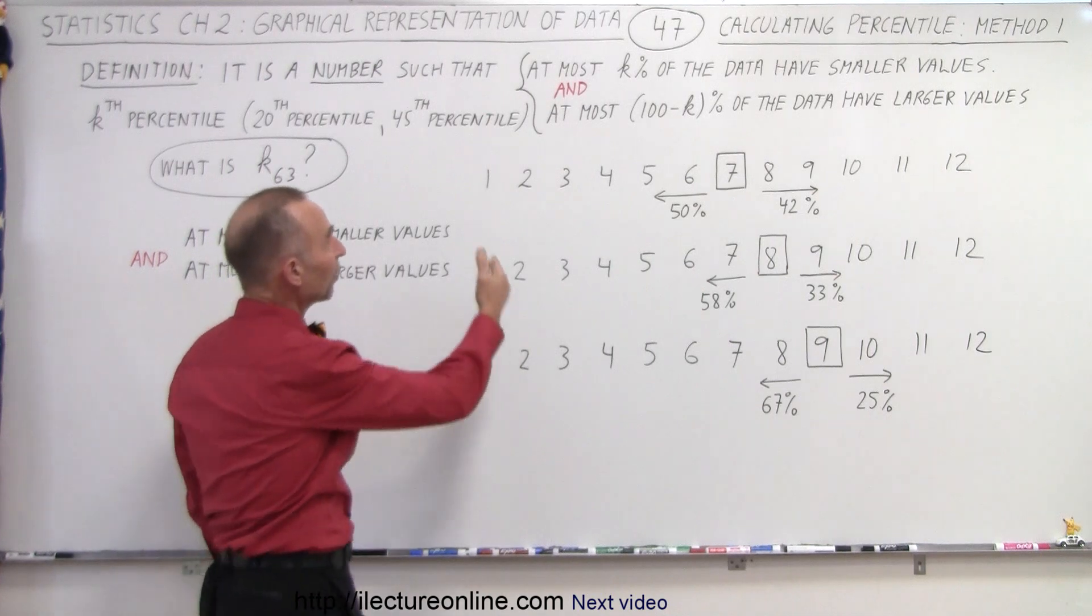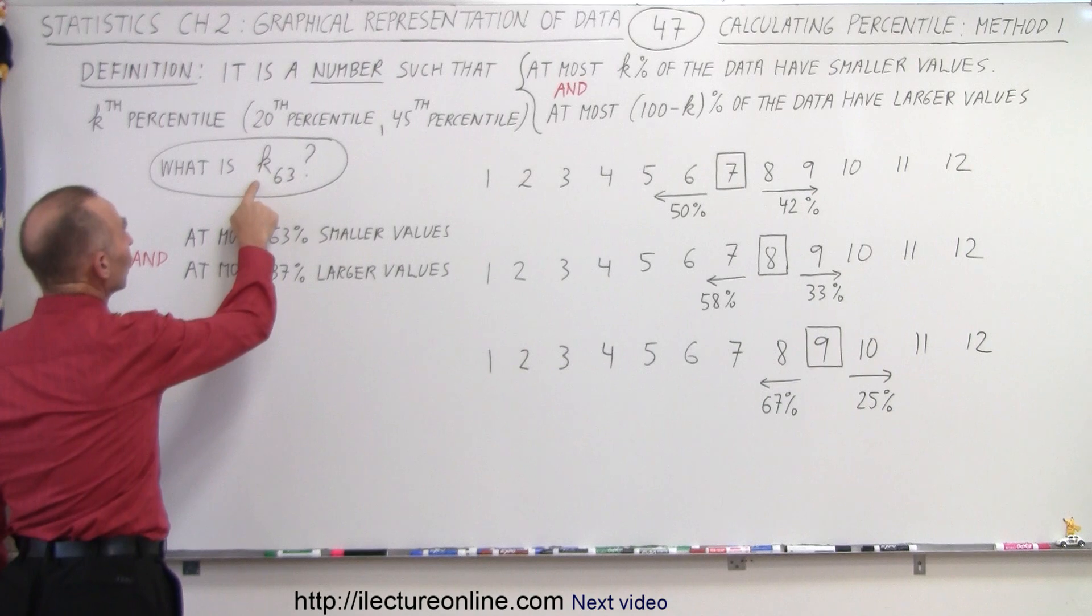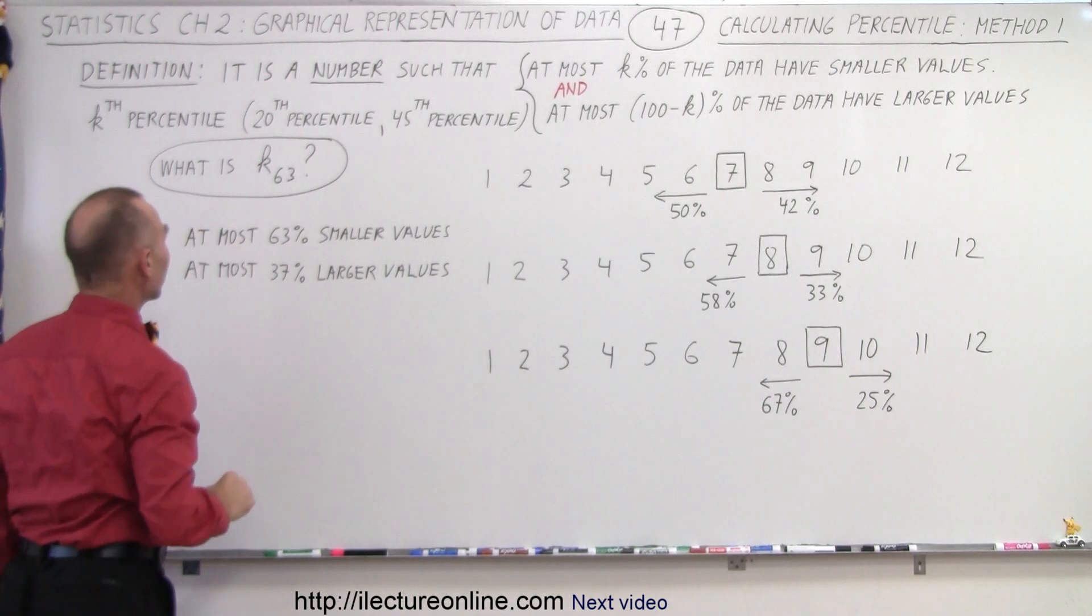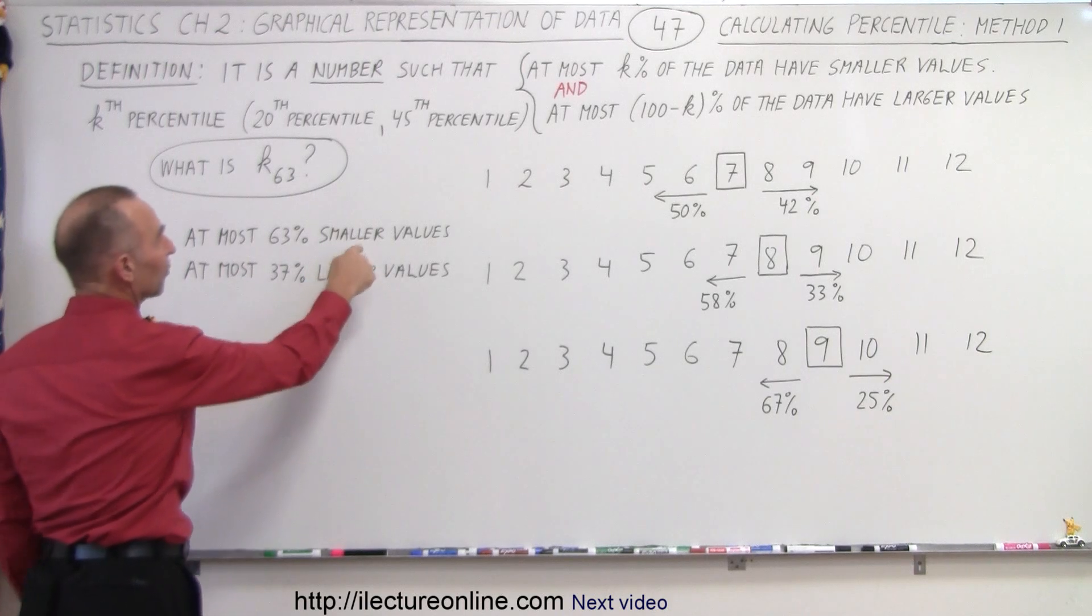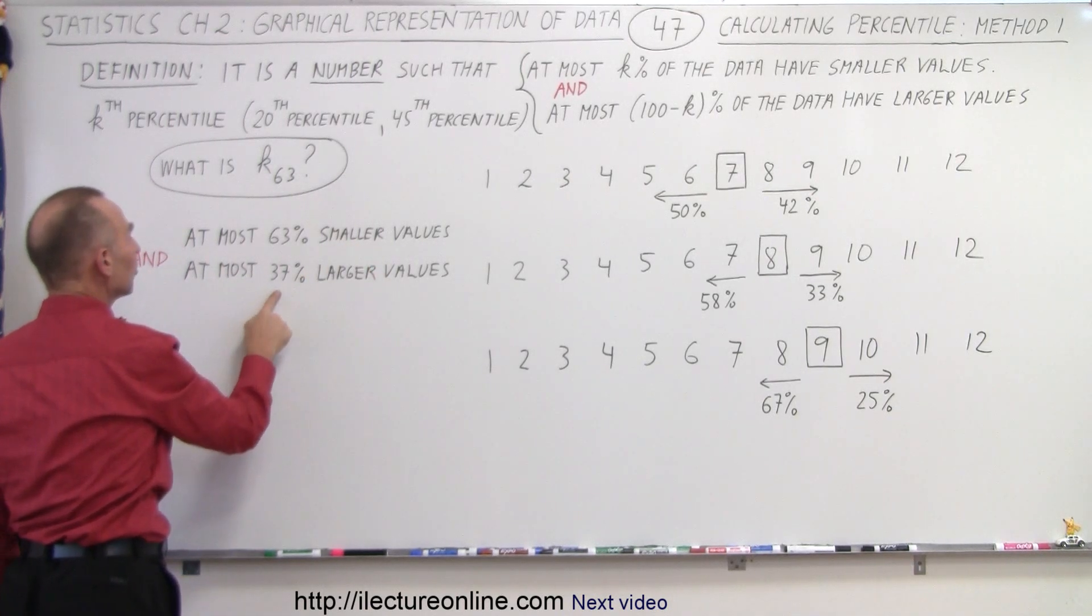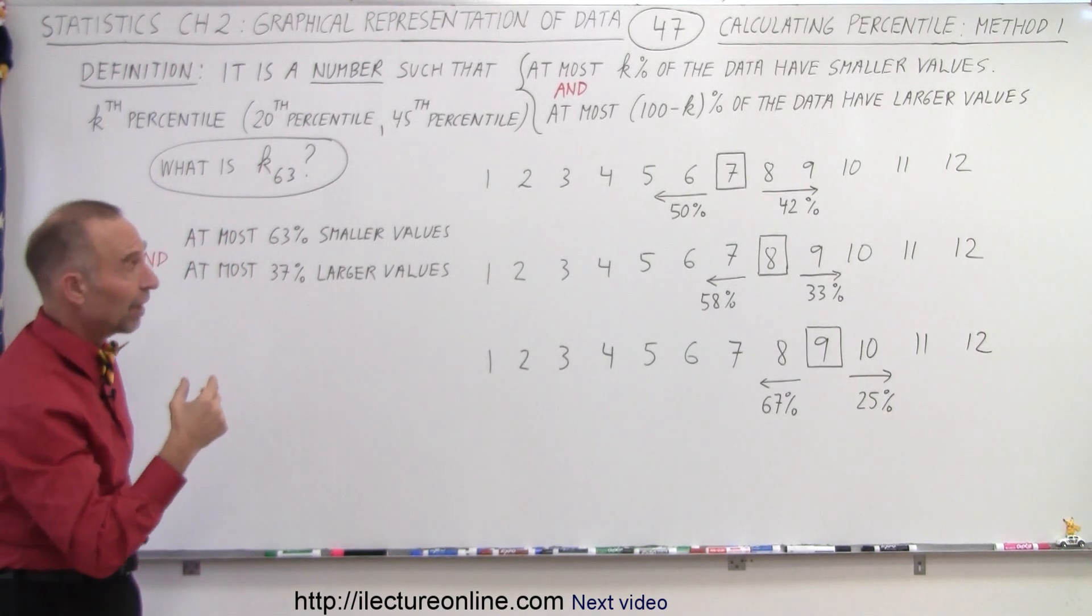So let's say we have a small data set of 12 numbers. And notice we're looking for the 63rd percentile. So that means that at most 63% of all the data should have smaller values, and at most 37% of all the data should have larger values or may have larger values.